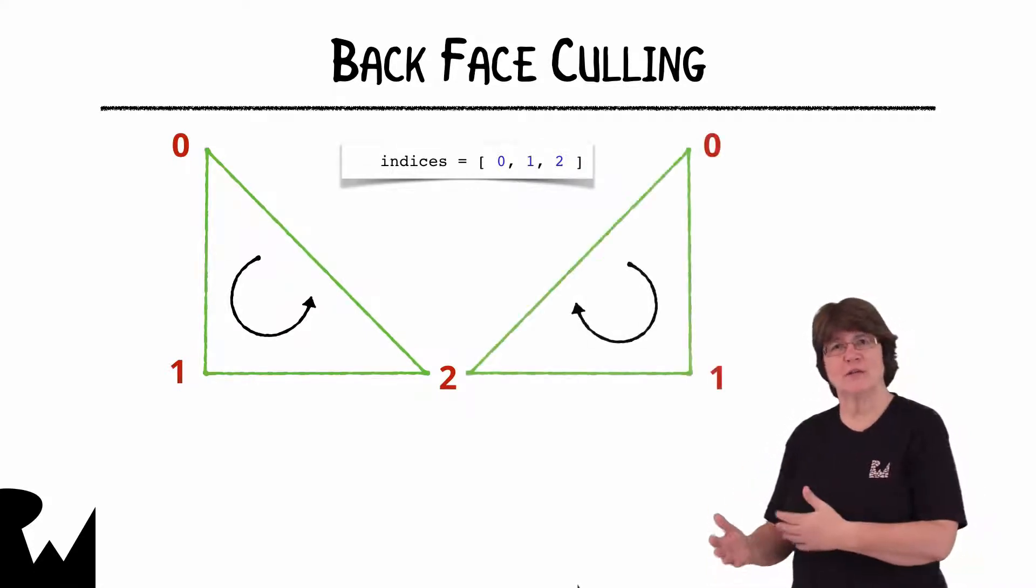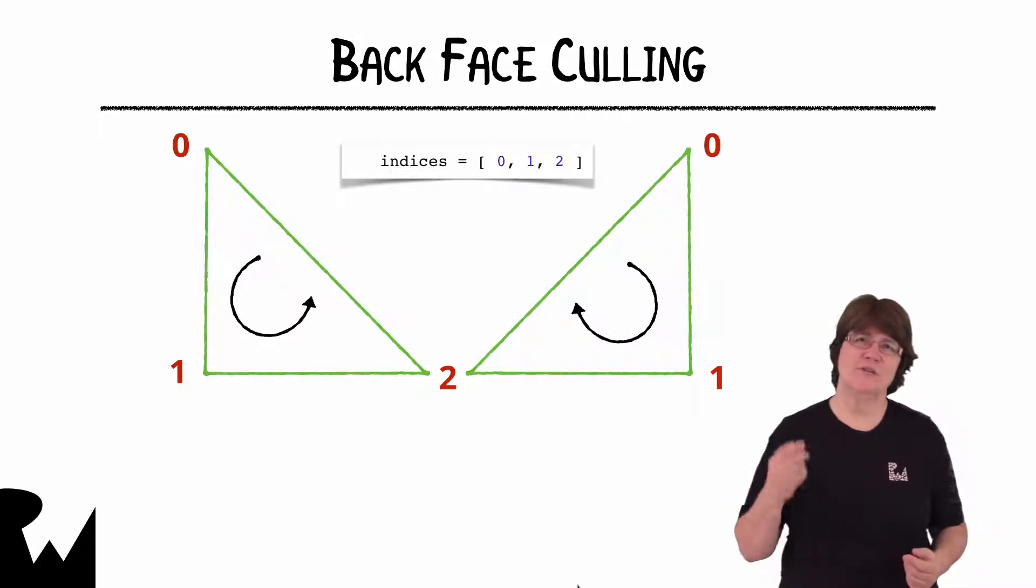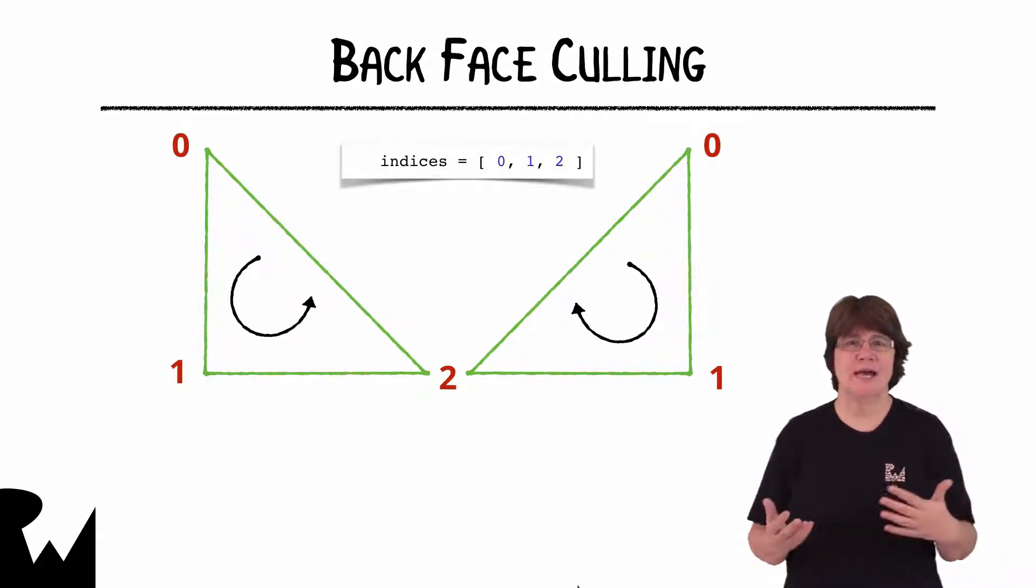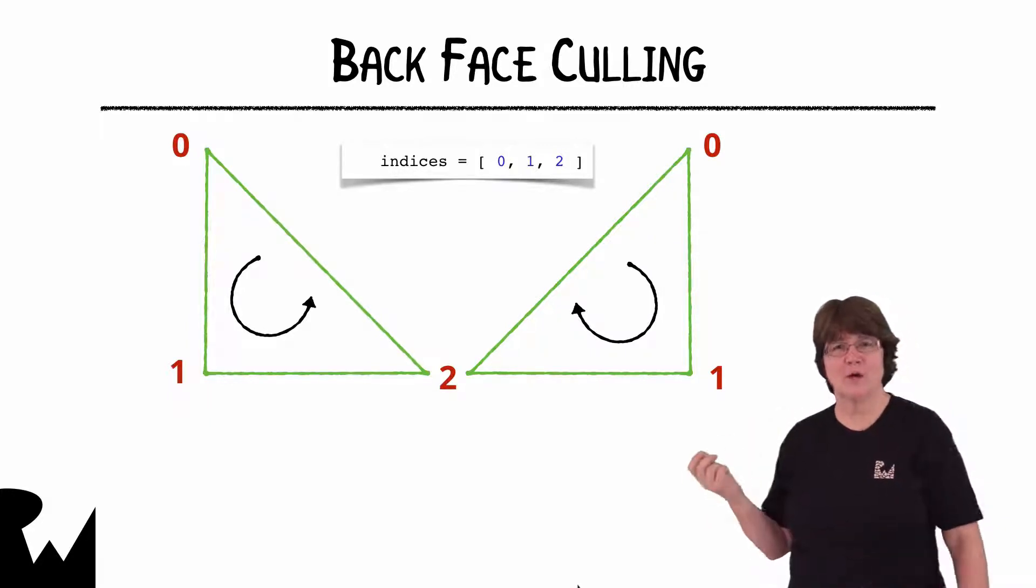When I turn this triangle away from us, the indices 0, 1 and 2 are now in clockwise order. So any triangle with its vertices in clockwise order is facing away from us.